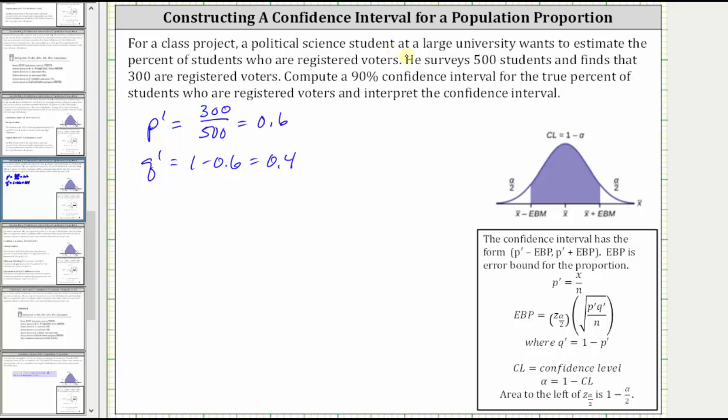Next, the confidence level is 90%, and therefore CL is equal to 0.9. Alpha is equal to one minus the confidence level, and therefore alpha is equal to one minus 0.9, or 0.1, and alpha divided by two is equal to 0.1 divided by two, which is equal to 0.05.